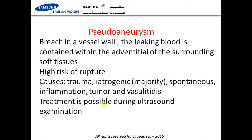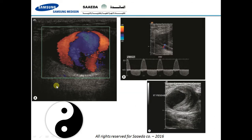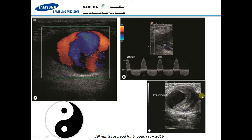If the pseudoaneurysm is fresh — less than one week — it is often possible to treat it non-invasively with ultrasound. You can see here the typical yin-yang sign: blood going in and out of the aneurysm sac with no discernible wall. When you remove the color Doppler, you can see a partial thrombus formed within the lumen of the aneurysm.